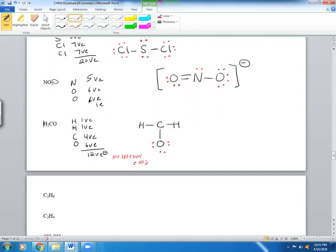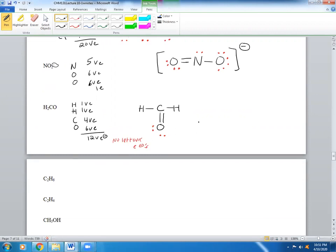Let's check C here. Is C happy? It's not. 2, 4, 6. So what should you do if you have no leftover electrons and it's not happy? You need double bonds. So what you're going to do is remove this lone pair and make it a double bond. Here it is. That's formaldehyde. So there's a double bond and two single bonds and lone pairs on oxygen.